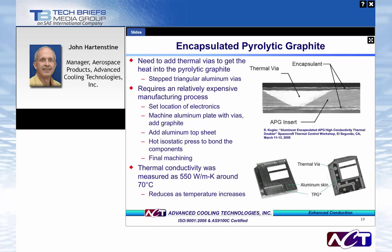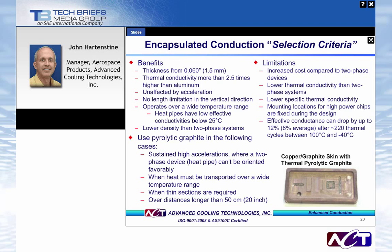Selection criteria for encapsulated conduction cooling: main benefits are thin form factor and thermal conductivity higher than aluminum. Not affected by acceleration or gravity, so suitable for sustained high-acceleration applications or where heat pipes cannot be oriented favorably. Wide temperature range — effective at lower temperatures where water heat pipes are not. Lower density compared to two-phase systems and long thermal transport length. Limitations include higher cost than passive two-phase devices, lower thermal conductivity than two-phase, fixed high-flux chip locations by design, and conductance shown to drop off as a function of thermal cycling.